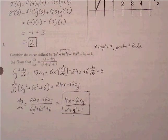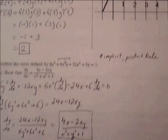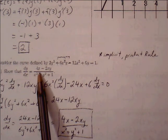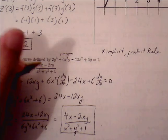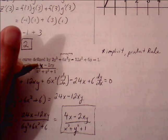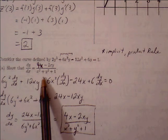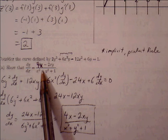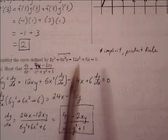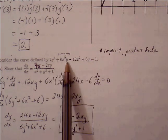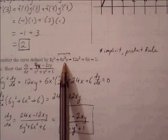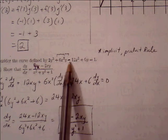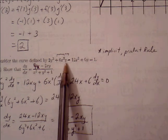Number three: consider the curve defined by 2y³ + 6x²y − 12x² + 6y = 1. We need to show that the derivative is (4x − 2xy) / (x² + y² + 1). Notice that x and y are mixed within each other — this is not explicitly defined as y equals in terms of x, so we have to go through implicit differentiation. We also have to involve product rule because we see two variables related to one another by multiplication.